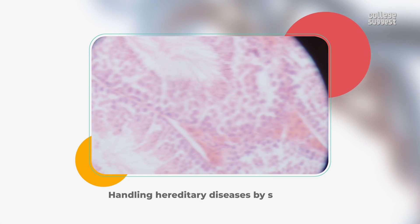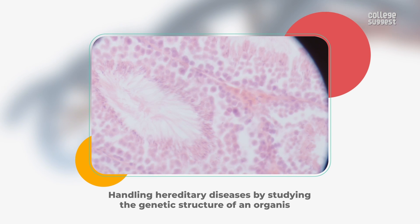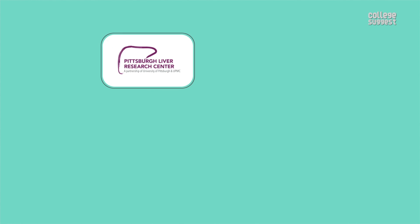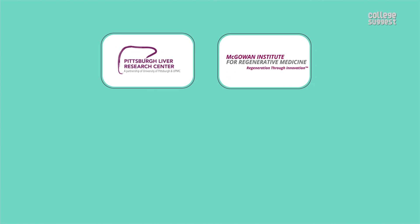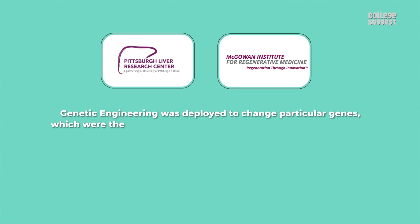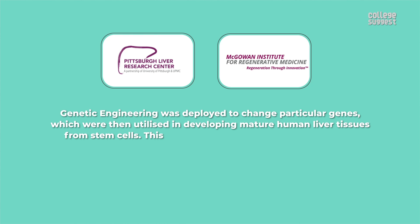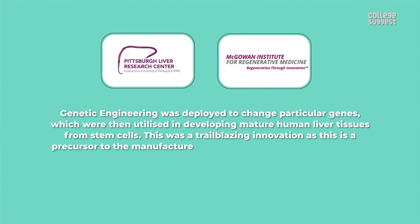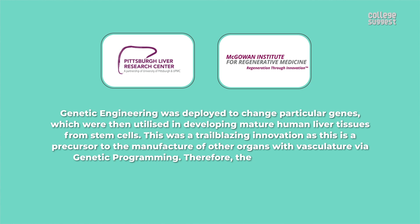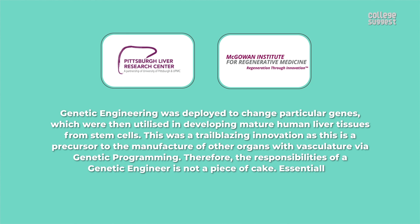Handling hereditary diseases by studying the genetic structure of an organism. At the Pittsburgh Liver Research Center and McGowan Institute for Regenerative Medicine, genetic engineering was deployed to change particular genes, which were then utilized in developing mature human liver tissues from stem cells. This was a trailblazing innovation as it is a precursor to the manufacture of other organs with vasculature via genetic programming. Therefore, the responsibilities of a genetic engineer are not a piece of cake.